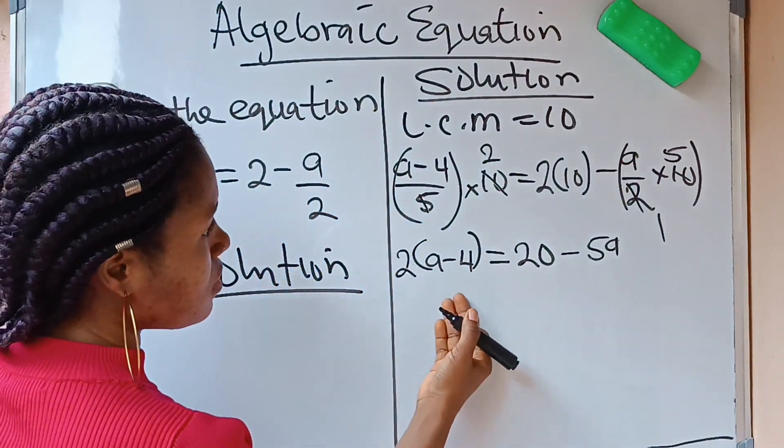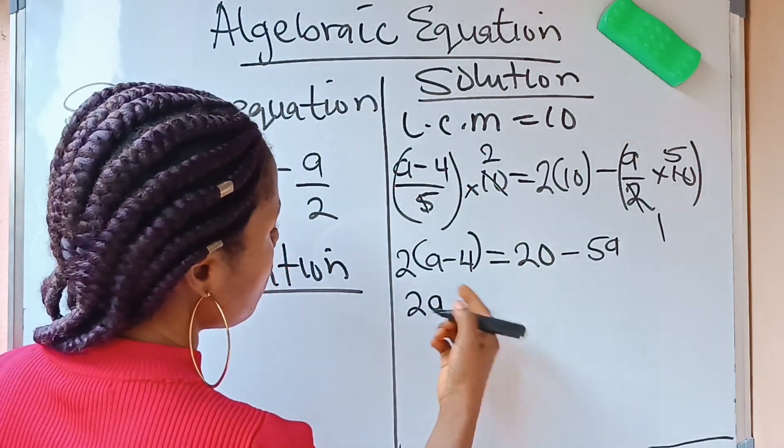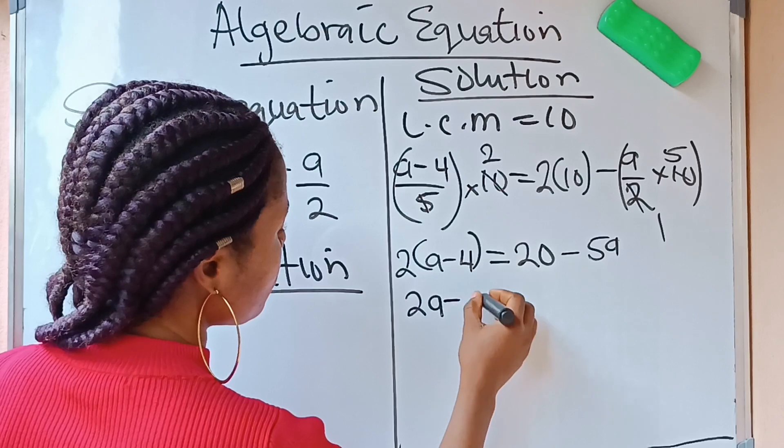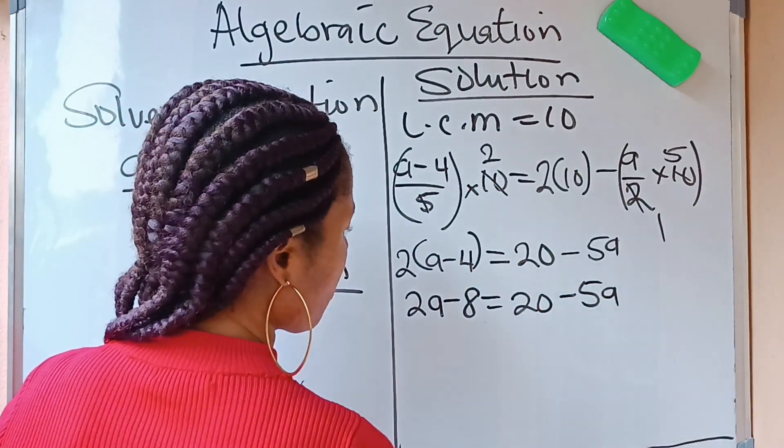So, let's open this bracket. 2 times A is going to give us 2A. 2 times minus 4 is going to give us minus 8. It is equal to 20 minus 5A.